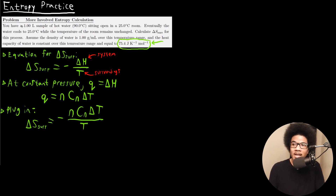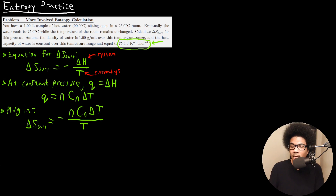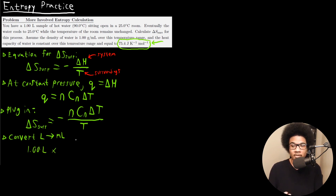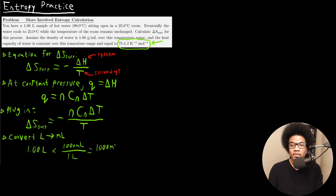We can use the given one liter volume and the density to calculate moles. First, convert liters to milliliters: one liter times 1000 milliliters per liter gives us 1000 milliliters of water.